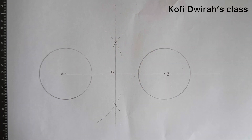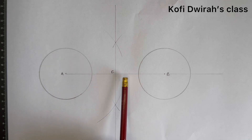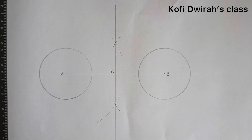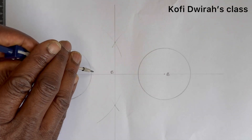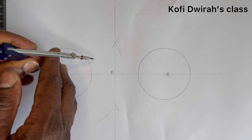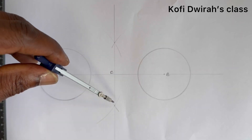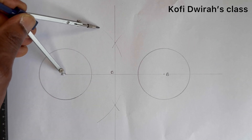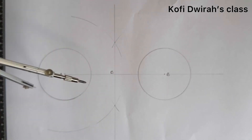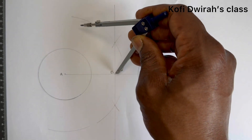Now bisect segment AC, and also segment CB. With your compass at point A, open it to more than half and draw an arc. At point C, draw another arc — the arcs intersect like this.